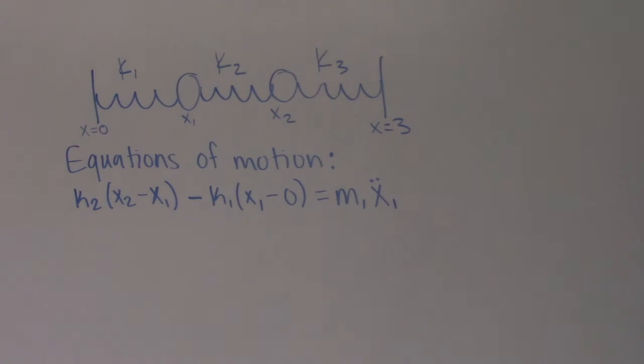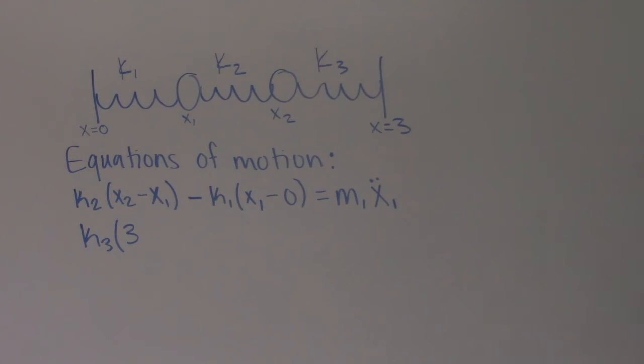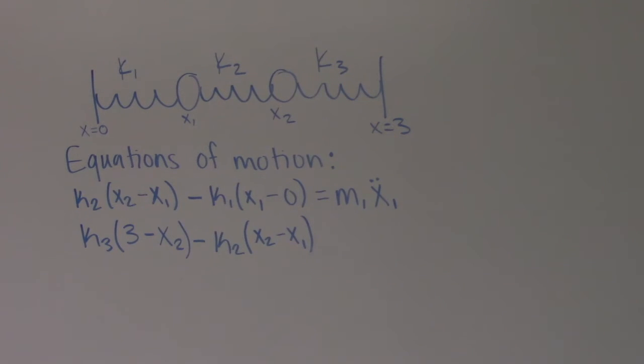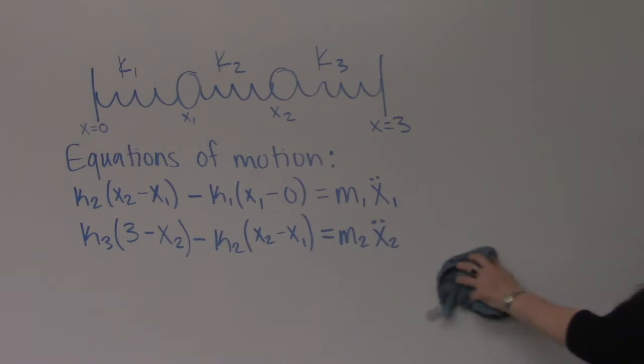Our second equation of motion is k3 times 3, which accounts for the non-moving wall on the right, minus the position of mass 2. Our second term will again be negative since it's a force in the opposite direction. This is k2 times the position of the second mass minus the position of mass 1. This is set equal to the mass of mass 2 times the acceleration of mass 2.